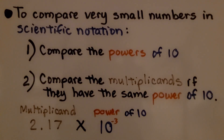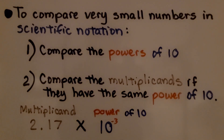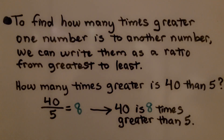As we learned in the previous video, to compare very small numbers in scientific notation, the first thing we do is compare the powers of ten. Then we compare the multiplicands if they have the same power of ten. To find how many times greater one number is to another, we can write them as a ratio from greatest to least.